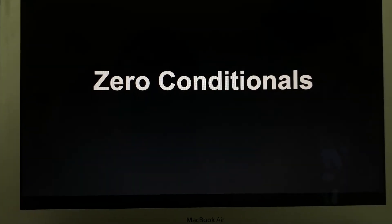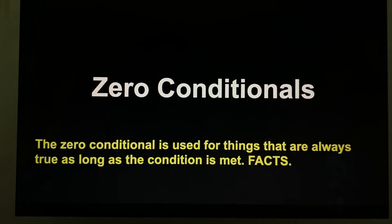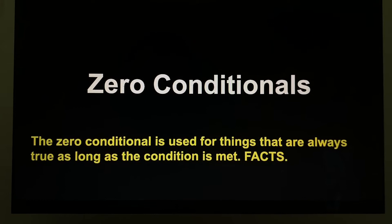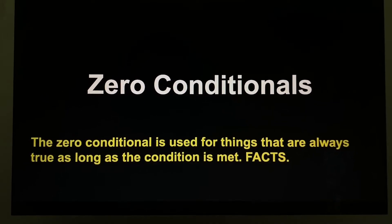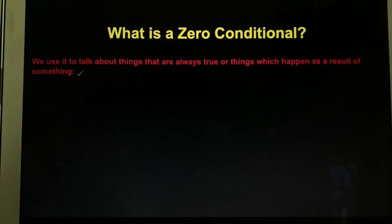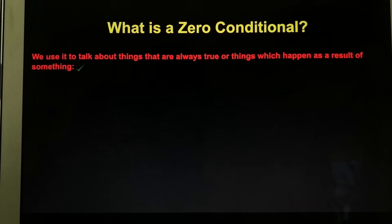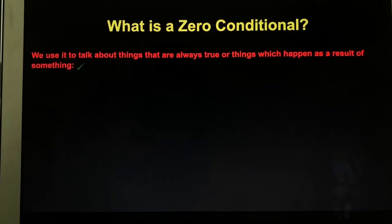Hi everyone. So today's grammar lesson is about zero conditionals. The zero conditional is used for things that are always true as long as a condition is met. What is a zero conditional? We use it to talk about things that are always true or things which happen as a result of something.